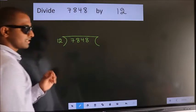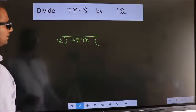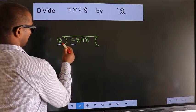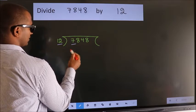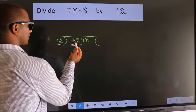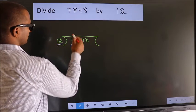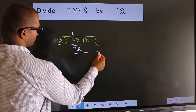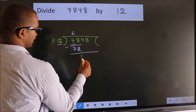This is step 1. Here we have 7 and here 12. 7 is smaller than 12, so we should take 2 numbers: 78. A number close to 78 in the 12 times table is 12 sixes, which is 72. Now we subtract and we get 6.